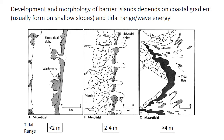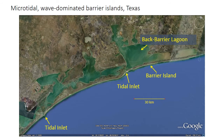Here's a microtidal barrier island in Texas. You can see that the islands are very continuous — they're only broken by very widely spaced and rare tidal inlets, with nearly 75 kilometers between the two tidal inlets indicated. The area behind the barrier, the back barrier, is dominated by a lagoon — an area of quiet, open water with likely fine-grained sediments because it's low energy and protected from the waves.